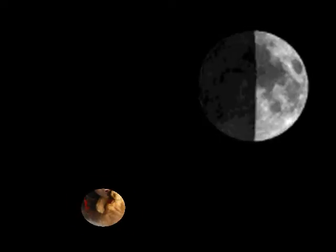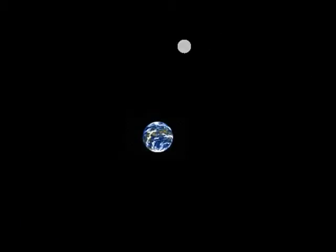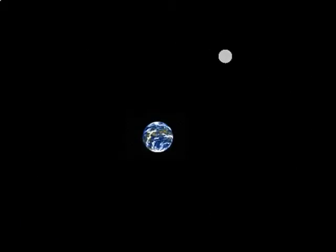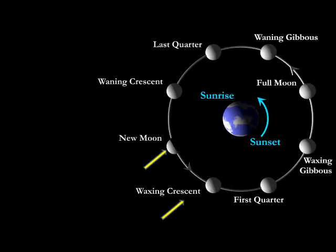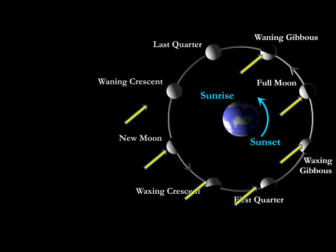Moon phases amaze us the first day we look up. We know that the phases of the moon are caused by the moon revolving around the Earth. As the moon moves around the Earth, sunlight strikes the moon at different angles and we see different amounts of the moon's surface. There are two pairs of words that we need to understand.